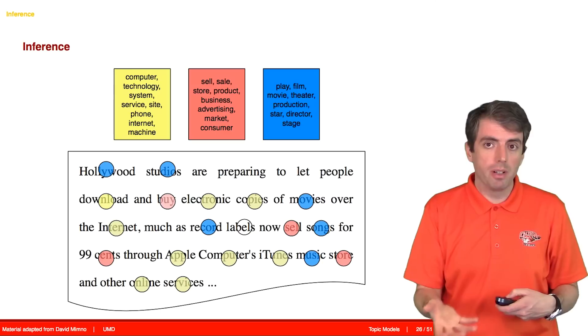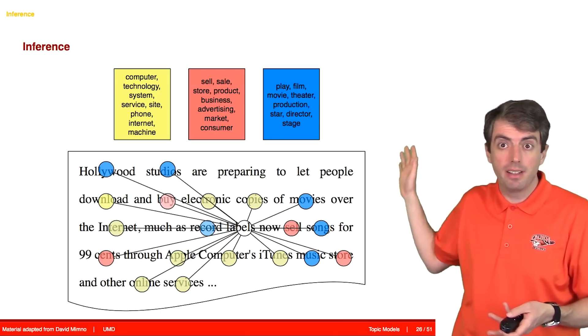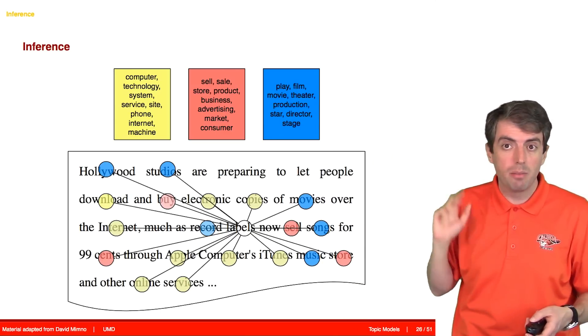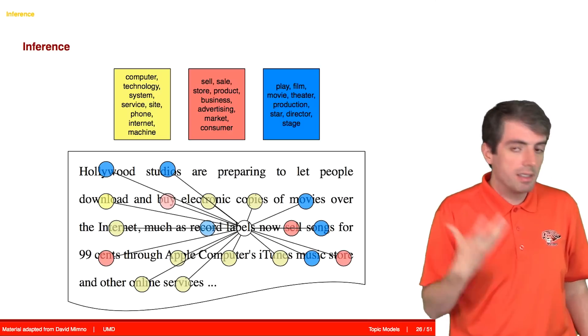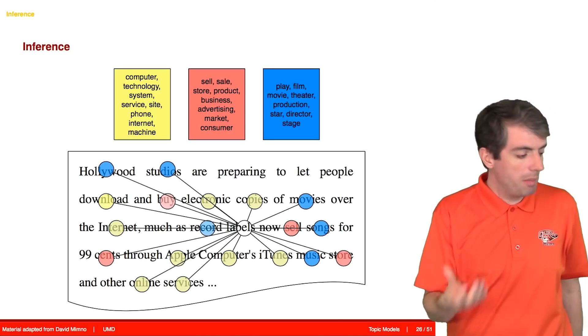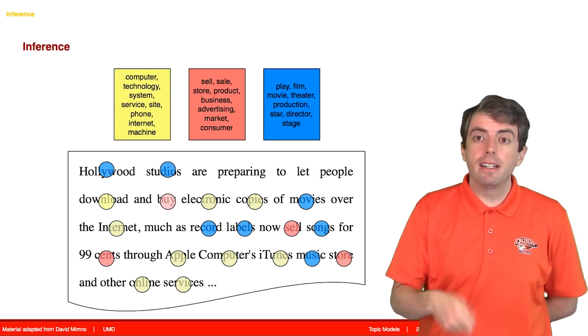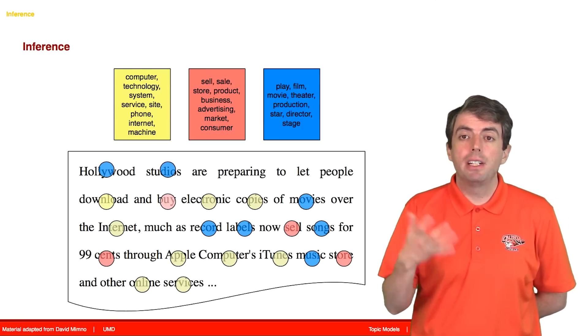And then we move on to the next word. And again, all of the other words in all of the other documents and in all of the rest of this document will influence what topic we assign to label. And then that will update our model, and hopefully our model gets a little bit better. We're going to do this again and again until we have a good model.